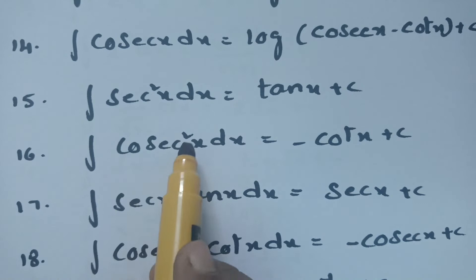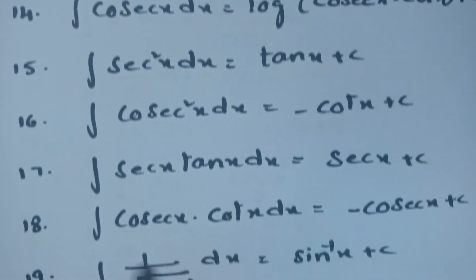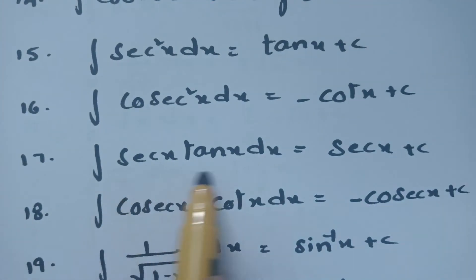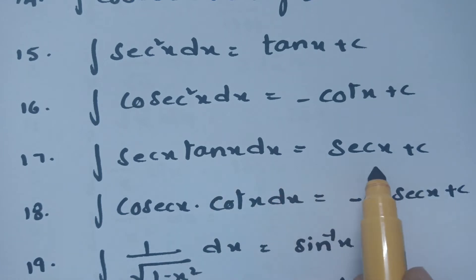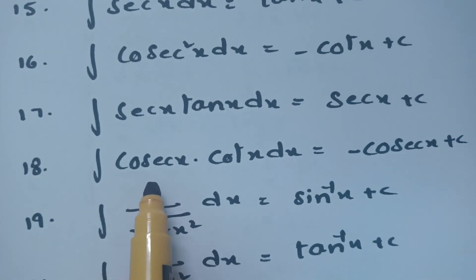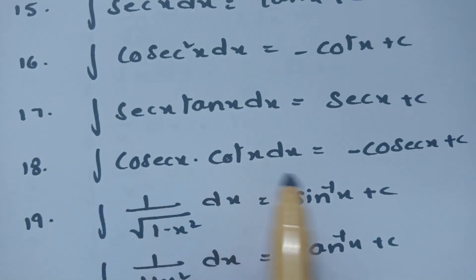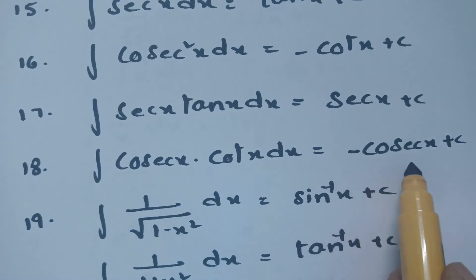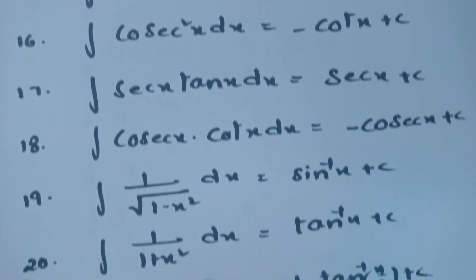Integral of cosec²x dx is nothing but −cot x plus c. Integral of sec x · tan x dx is nothing but sec x plus c. Integral of cosec x · cot x dx is nothing but −cosec x plus c.